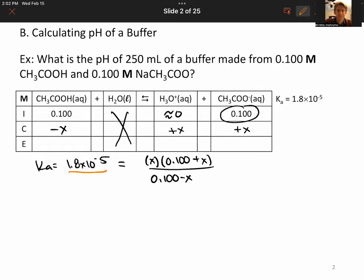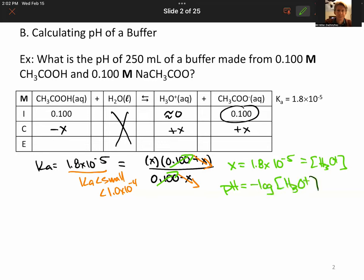That's going to be equal to our products over our reactants. It's going to be x times 0.100 plus x over 0.100 minus x. That's our setup. Ka is small, less than 1.0 times 10 to the minus 4th. That means we can ignore x when it's added to or subtracted from another number. We've got two things that are exactly the same on the top and the bottom, so we can cancel them. We get that x equals 1.8 times 10 to the minus 5th, and that is our concentration of hydronium from which we can find our pH, which equals 4.74.